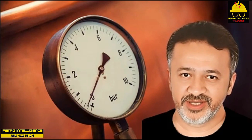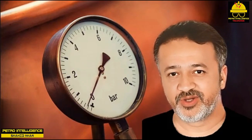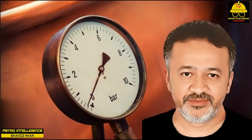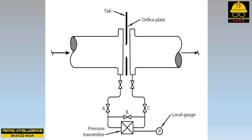Checking flows in the field: a competent engineer does not assume the flow indication shown on the control panel is correct. Referring to the picture, place an easy-to-read pressure gauge in the position shown — a digital gauge works well. By opening valves A and B with C closed, you read the upstream pressure. By opening valve C with A and B closed, you read the pressure downstream of the orifice plate. The difference between the two readings is ΔP — solve for V using the preceding equation.